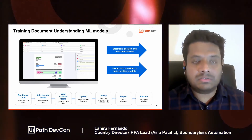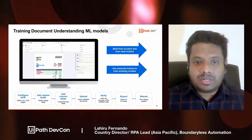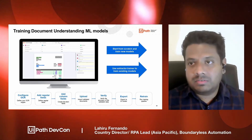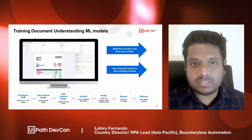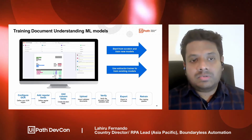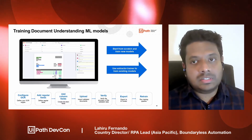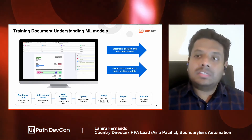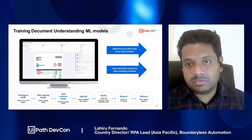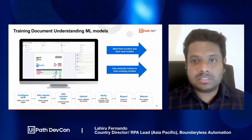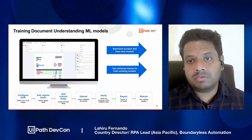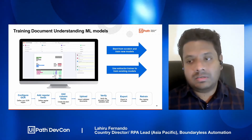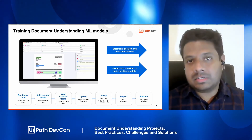If your document has tabular data, you can also create the columns that you need to extract. Once you have defined the columns, you just need to upload the documents. Since we have two approaches — if you are creating the model from scratch, once you upload the initial dataset you need to highlight the data and assign it to the respective fields by clicking on the shortcut keys. Or, if you are using the data generated through the extractor train activity, all that is done for you by the validation process in the workflow. You just need to verify the extracted data to make sure everything is correct, export the data into AI Center, and then create a training pipeline to train the existing model.